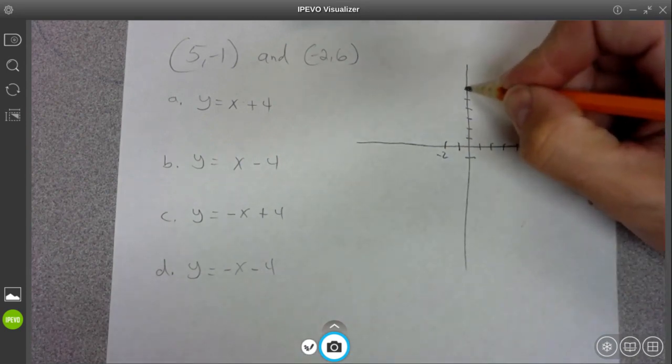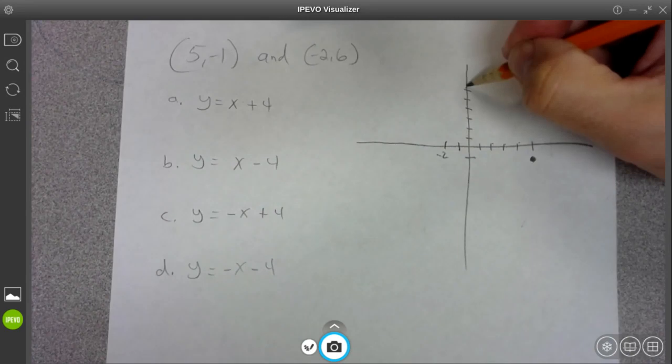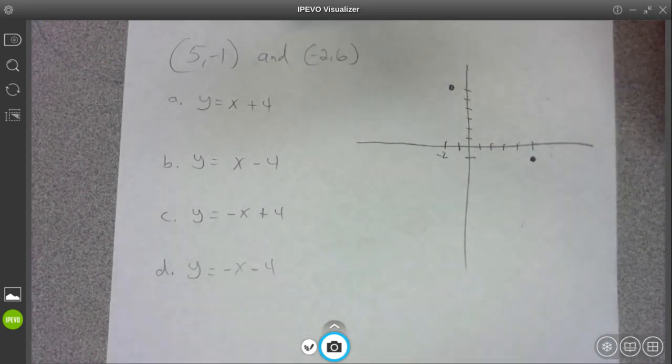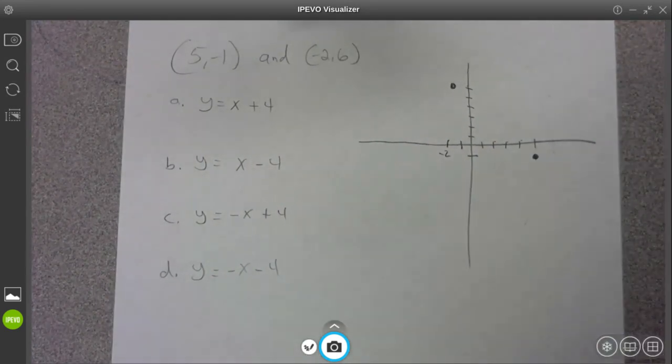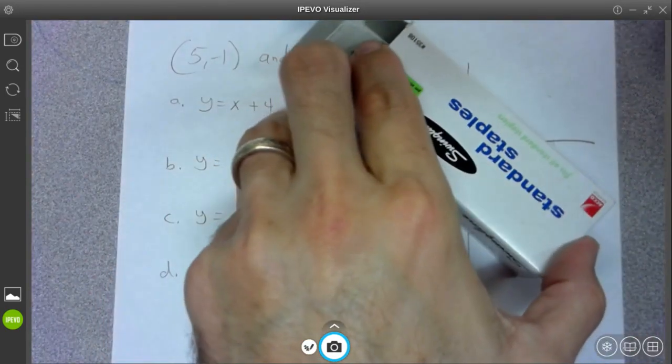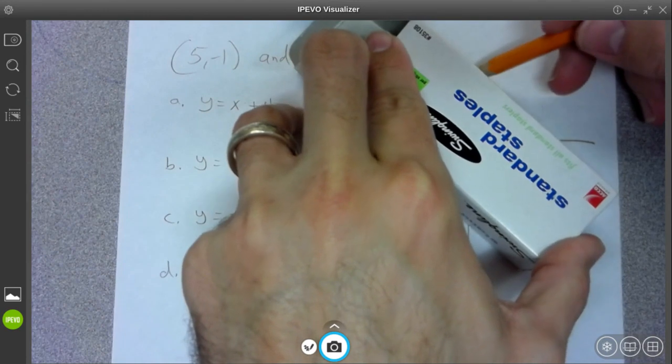That'll work. Oh, I almost put the point there. It actually goes right there. Alright. So we plotted our points. And now if I go through and actually draw the line-ish. It doesn't have to be perfect.